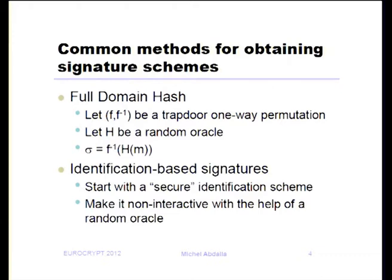Since in this talk I'll be focusing mostly on random oracle-based constructions, the most common methods for building signature schemes are: first, full domain hash, in which we have a one-way permutation and a random oracle, and the signature is simply the inverse computed on the hash of the message. The other type is building through identification schemes, in which we start with a secure prover identification scheme and make it non-interactive with the help of a random oracle.